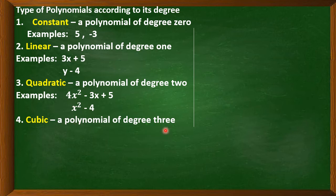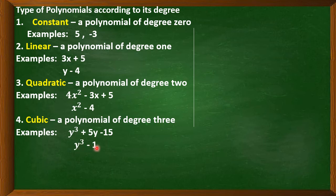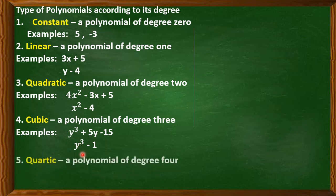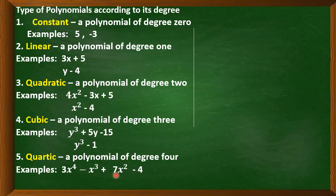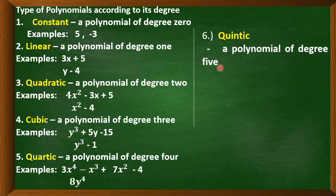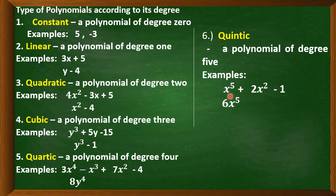A cubic polynomial has a degree of 3, for example y³ plus 5y minus 15 or y³ minus 1. A quartic polynomial has a degree of 4, for example 3x⁴ minus x³ plus 7x² minus 4 or y⁴. A quintic polynomial has a degree of 5, for example x⁵ plus 2x² minus 1 or 6x⁵. These two polynomials have a degree of 5.